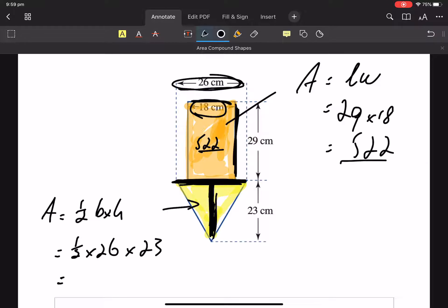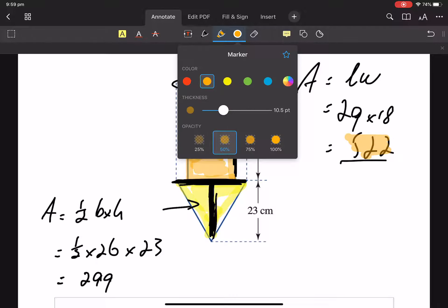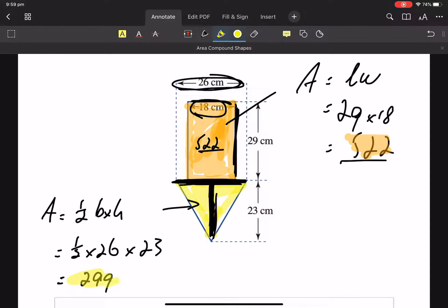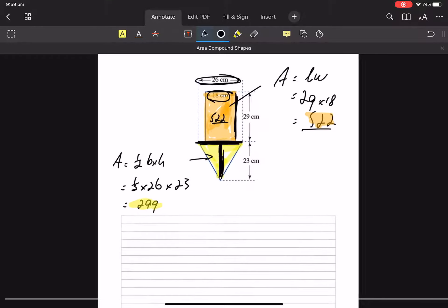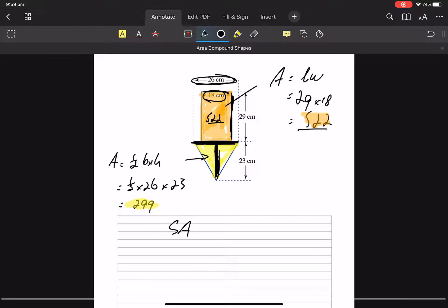Calculator. So I've got 522 there and 299 there. So let's go, the surface area is going to be 522 plus 821 and they're all in centimetres squared.